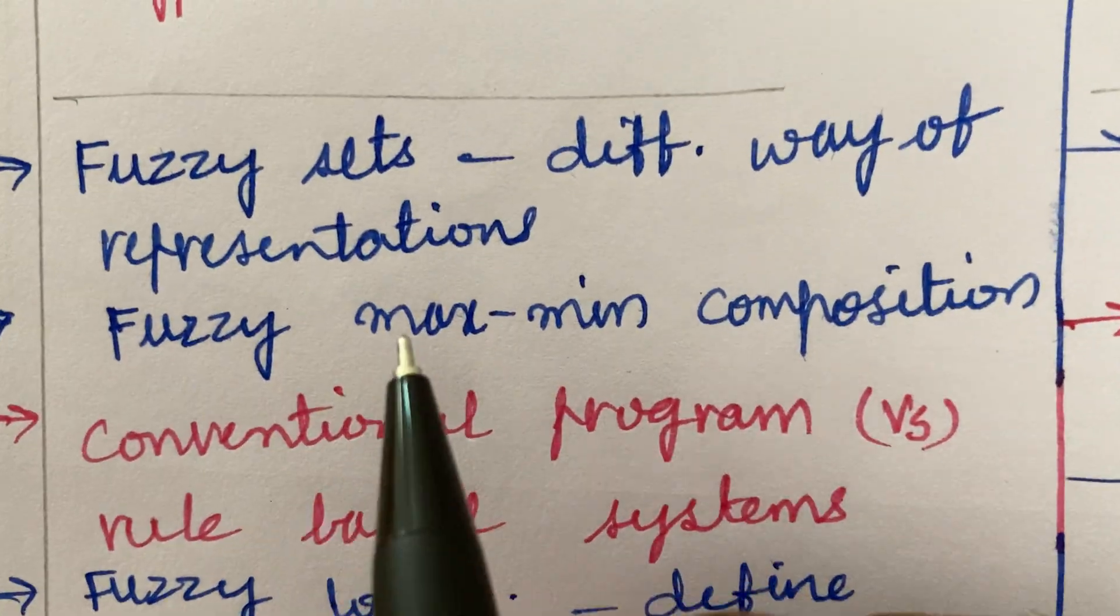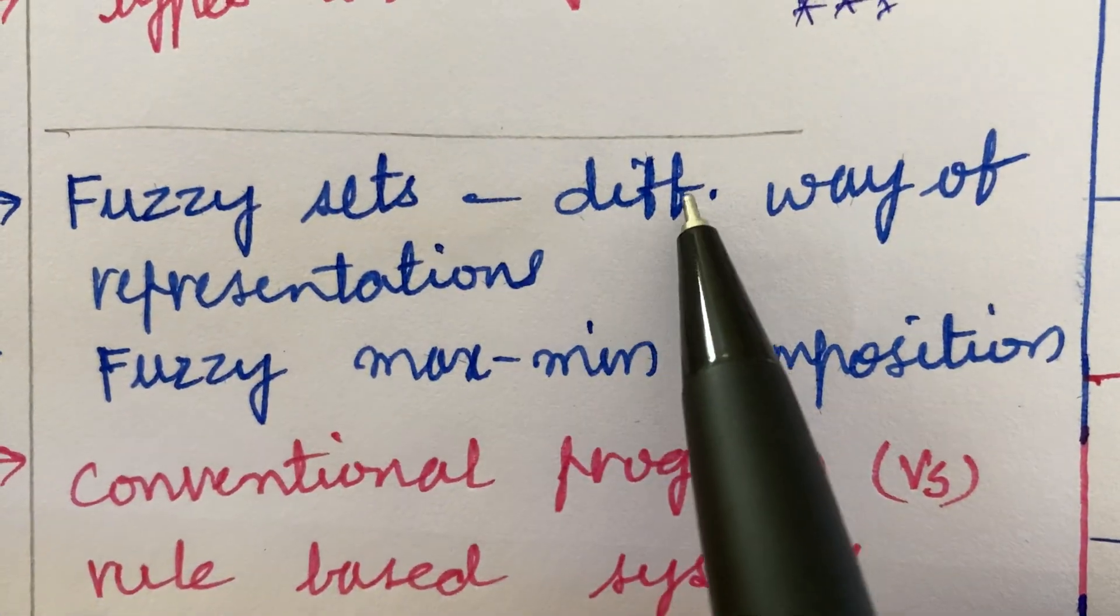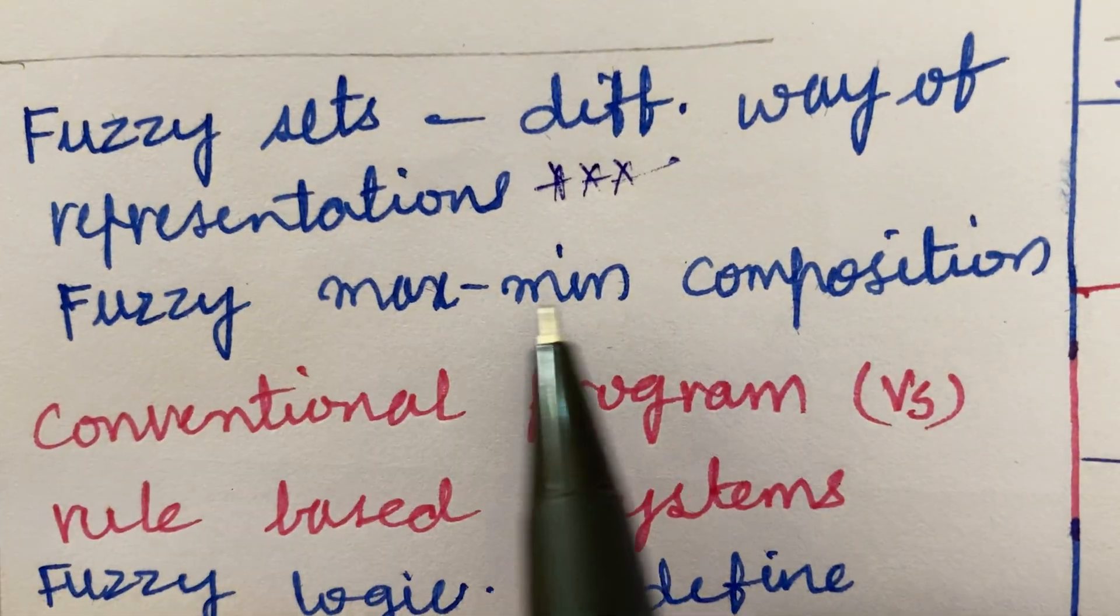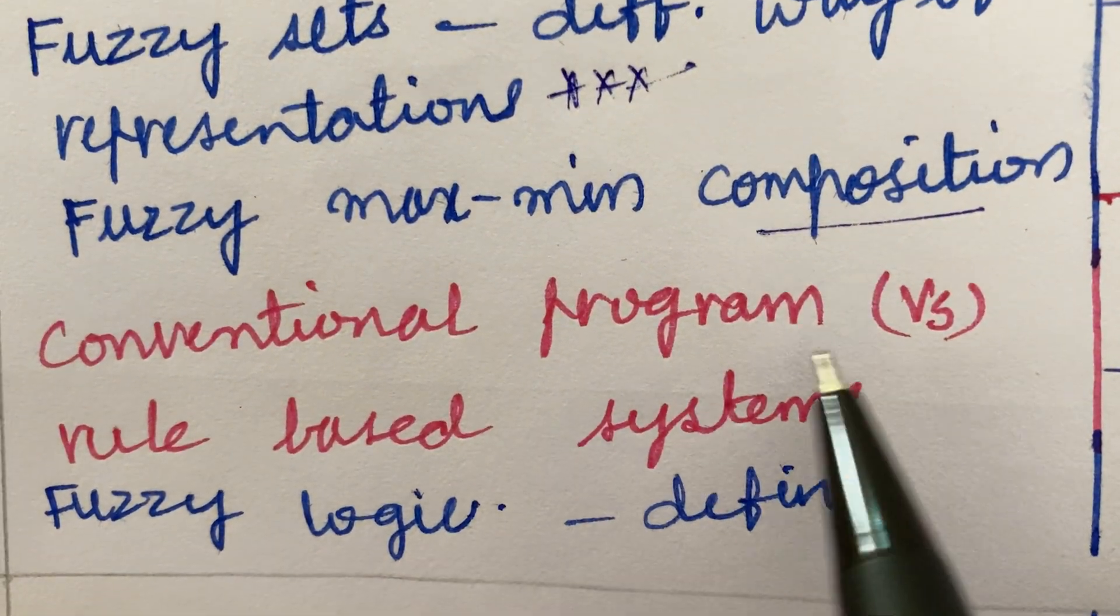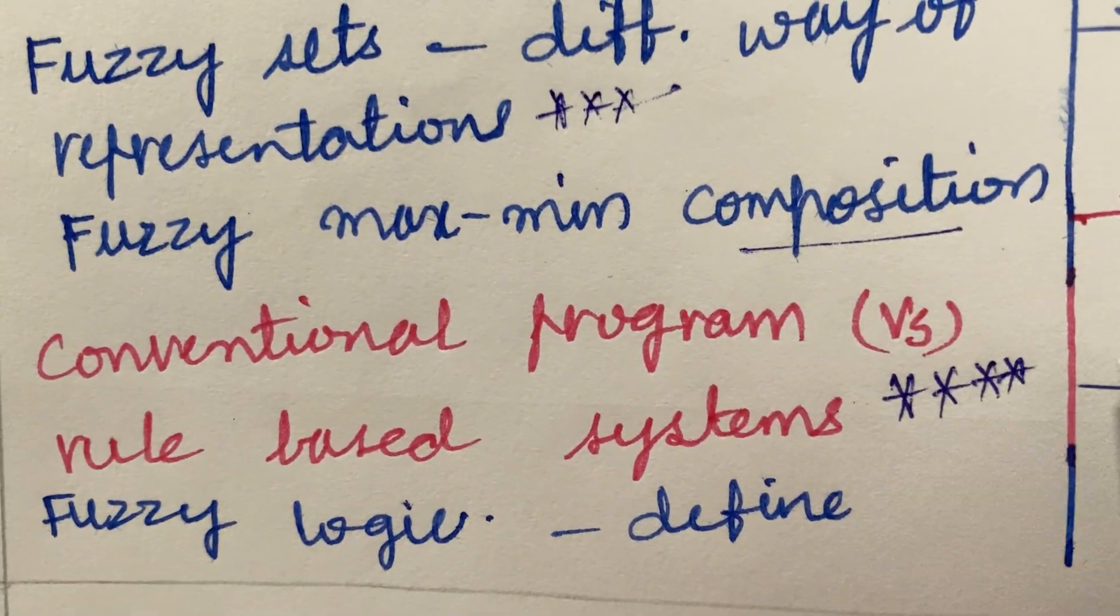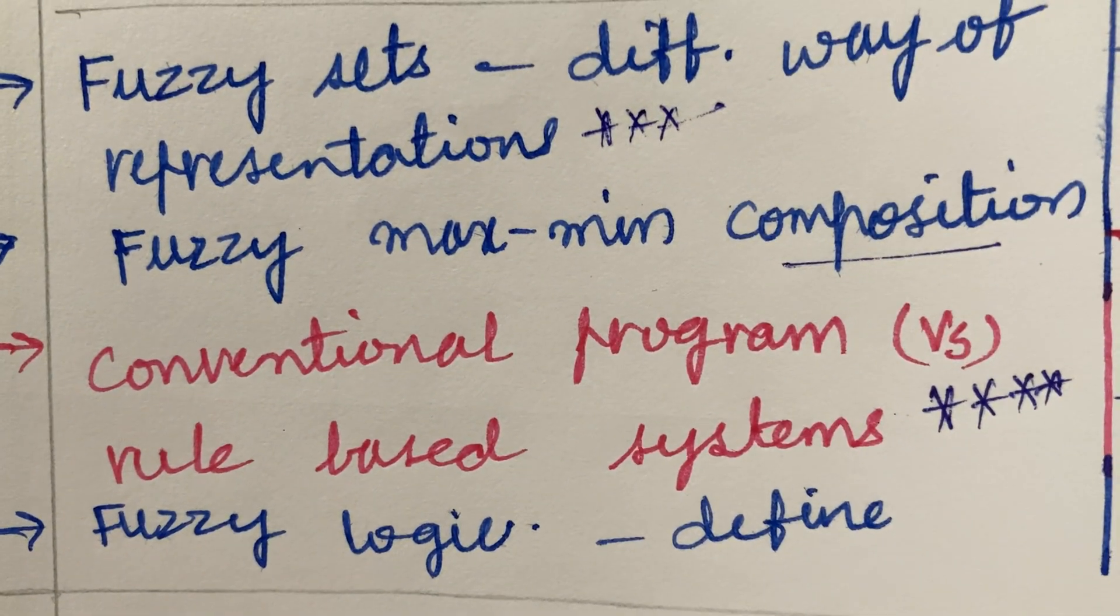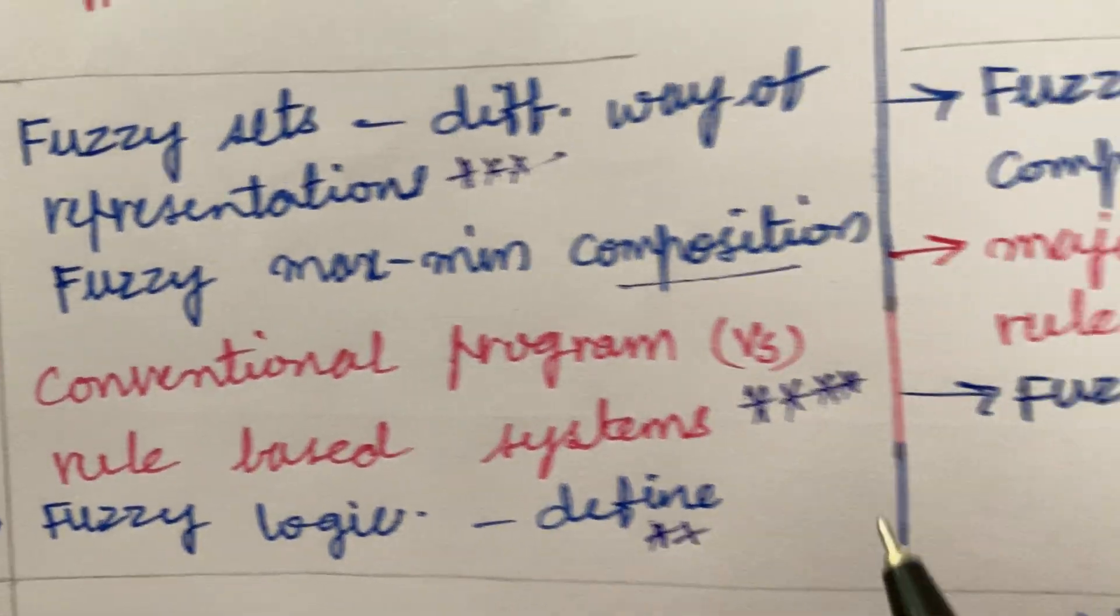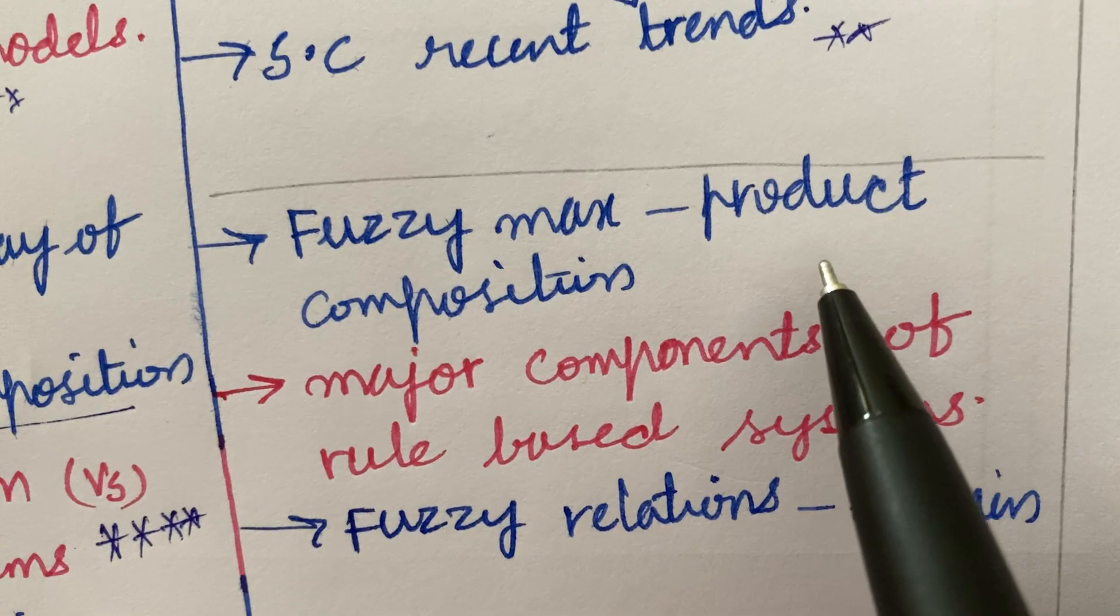Let's jump into the next unit. It's fuzzy sets and the different way of representation is also said to be a topmost question. Fuzzy max min composition as well as conventional program versus rule based system is said to be a direct 10 mark question. If it is asked in the exam for the differences, fuzzy logic and the defined term may be a 3 mark question.